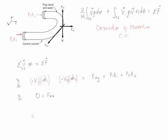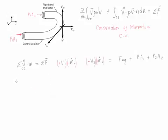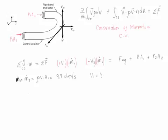Now let's calculate the values to plug into the equation, starting with the mass flow rate. Using conservation of mass, the mass flow rate at surface 1 equals the mass flow rate at surface 2, calculated as density times velocity at surface 1 times area 1, which equals 9.7 slugs per second. We also know the area is constant throughout the bend, so the velocity is the same at both control surfaces: V1 equals V2 equals 50 feet per second.